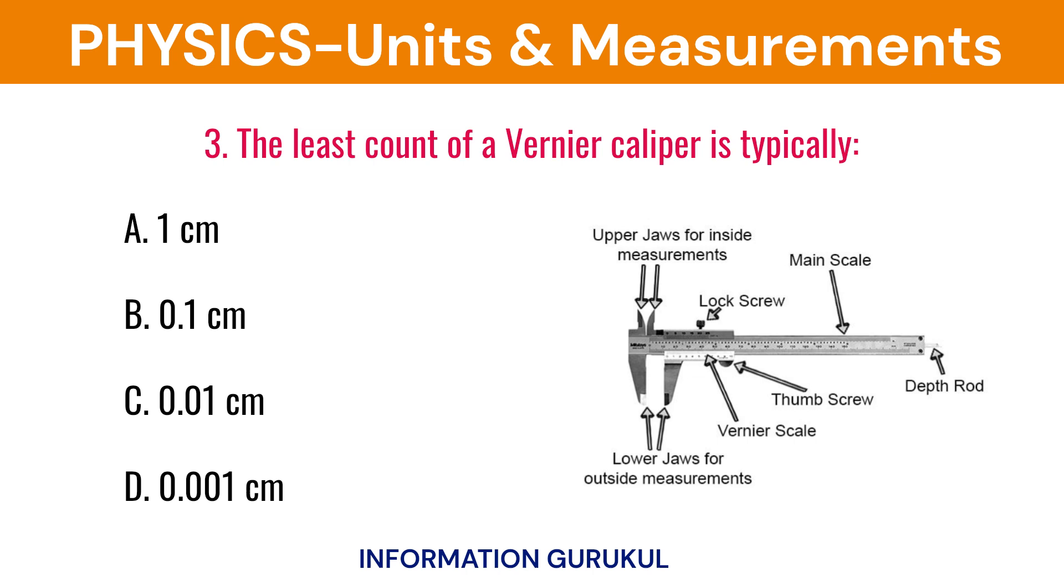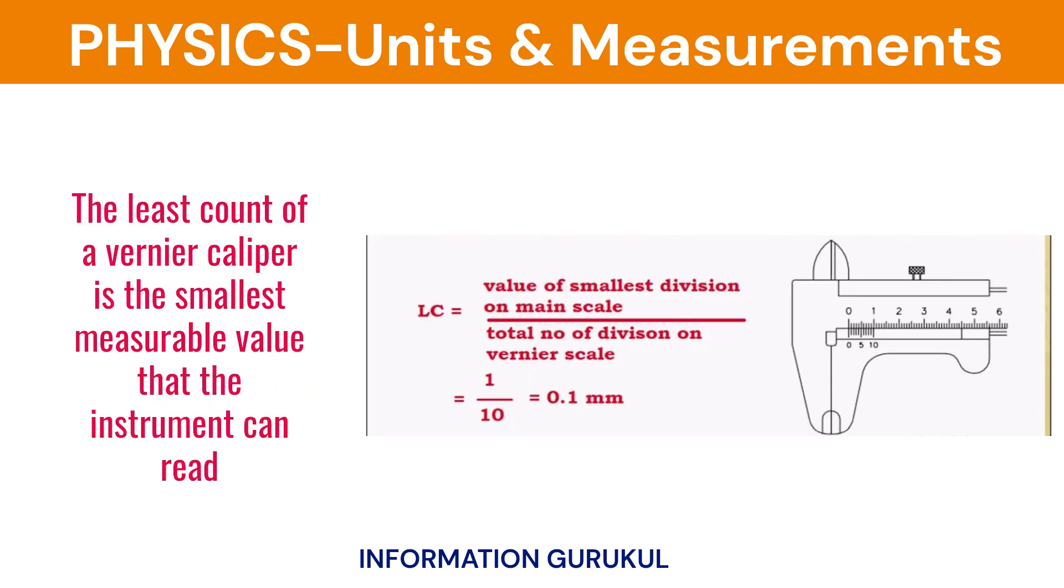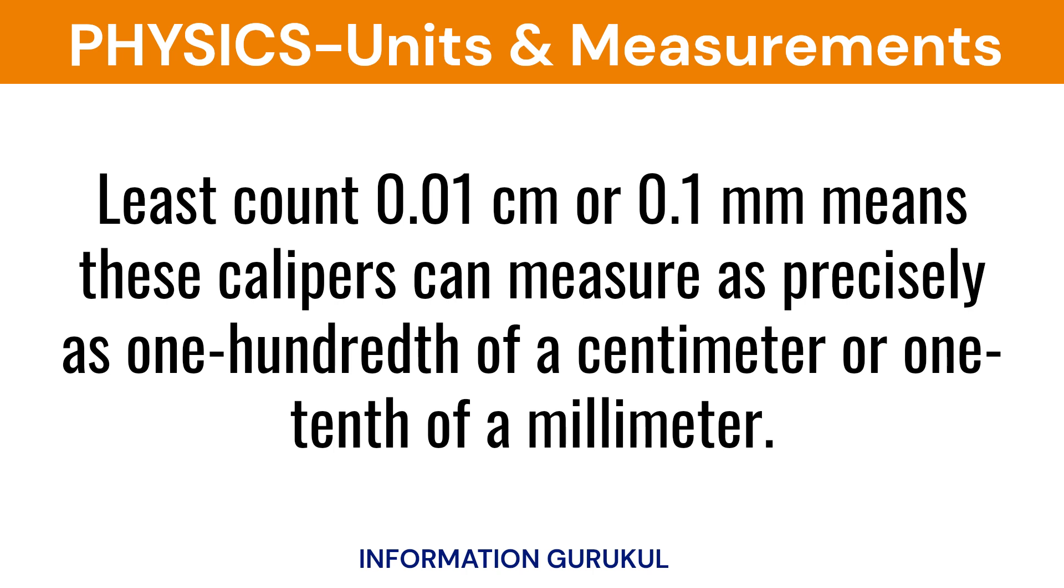The least count of a vernier caliper is typically 0.01 cm. The least count of a vernier caliper is the smallest measurable value that the instrument can read. Least count 0.01 cm or 0.1 mm means these calipers can measure as precisely as one hundredth of a centimeter or one tenth of a millimeter.